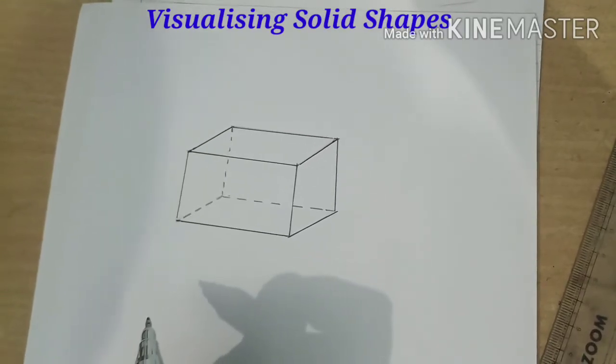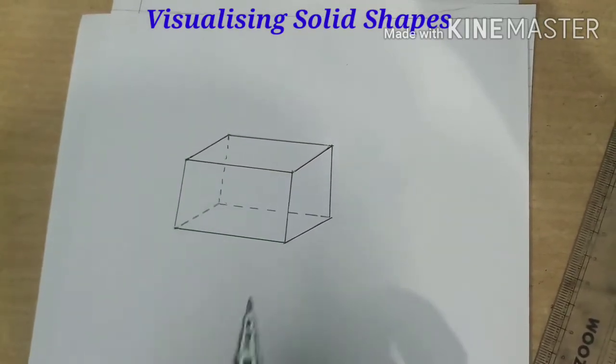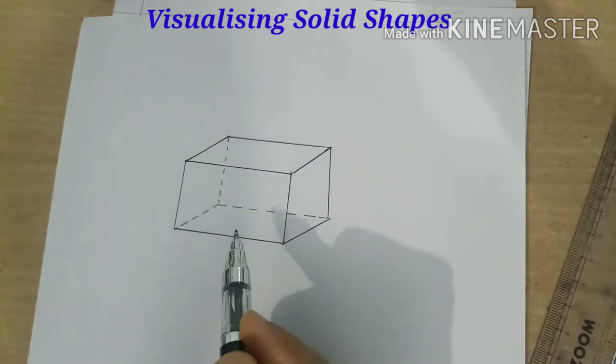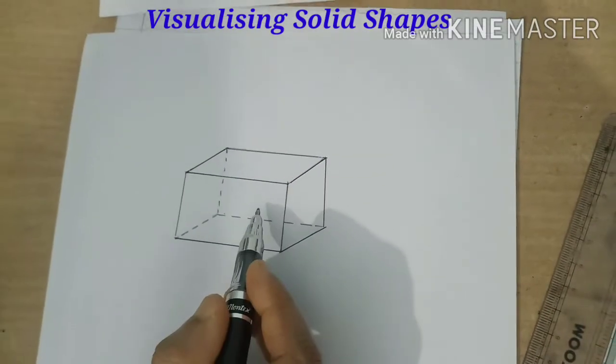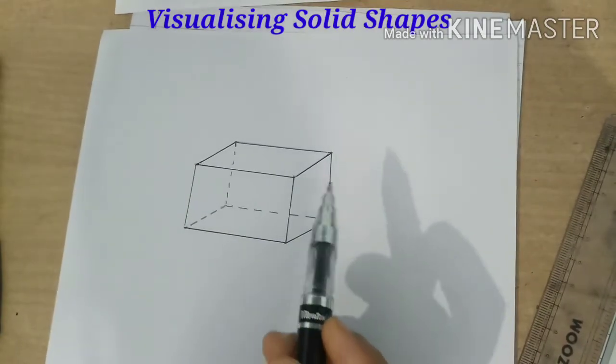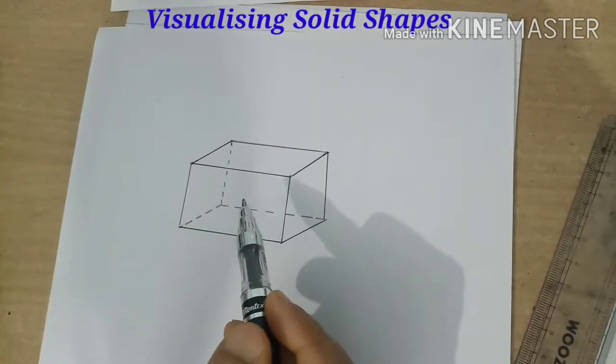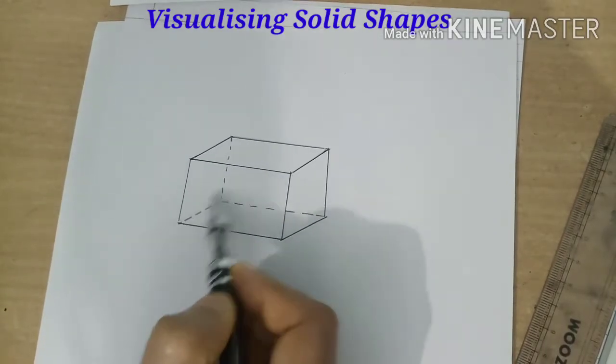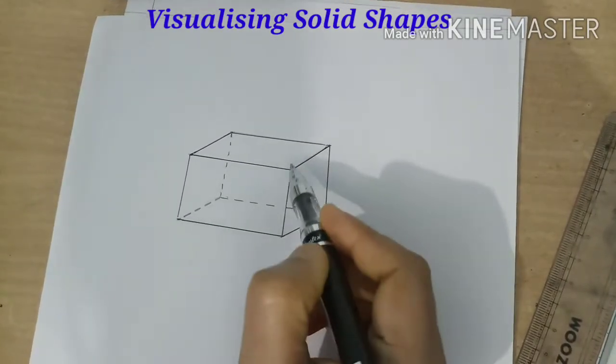In previous video we have learnt what are the solid shapes. Today we are going to learn some more about solid shapes and Euler formulas. Now we know a lot about solid shapes and different angles of viewing these solid shapes. Solid shapes like cuboid, prism, pyramid etc. are made up of polygon regions which are called its faces.